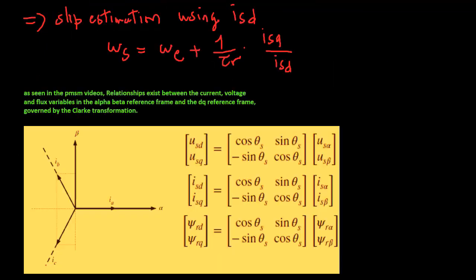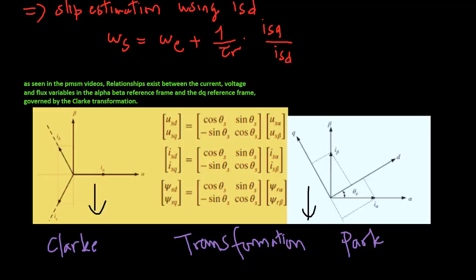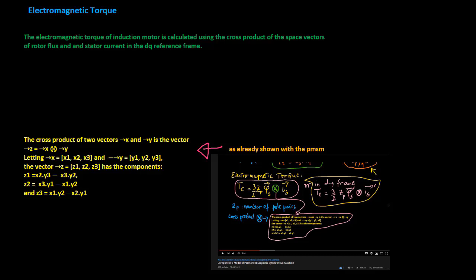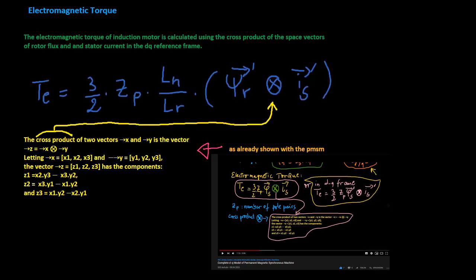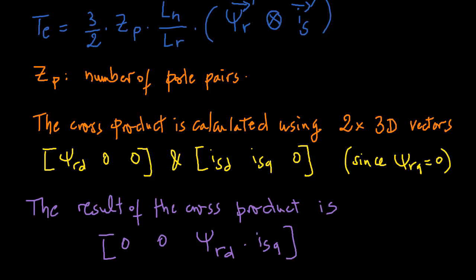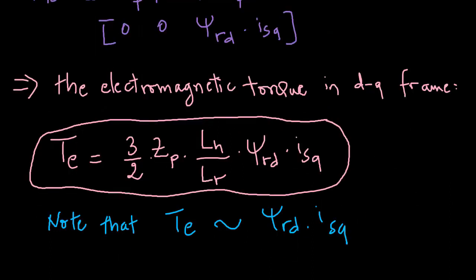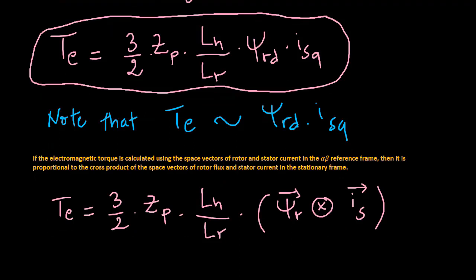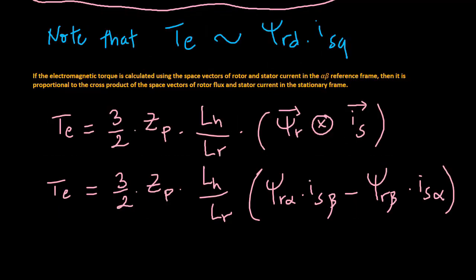As seen in the PMSM videos, relationships exist between the current, voltage, and flux variables in the alpha-beta reference frame and the DQ reference frame, governed by the Clarke transformation. The electromagnetic torque of the induction motor is calculated using the cross product of the space vectors of rotor flux and stator current in the DQ reference frame. If the electromagnetic torque is calculated using the space vectors in the alpha-beta reference frame, it is proportional to the cross product of the space vectors of rotor flux and stator current in the stationary frame.